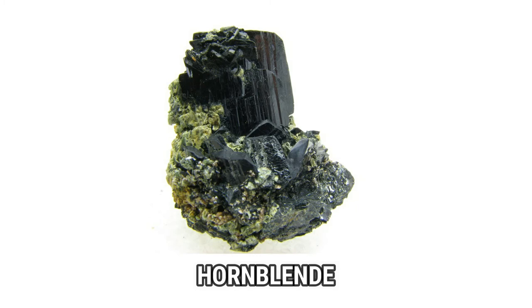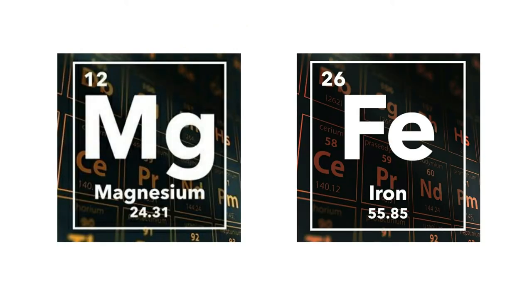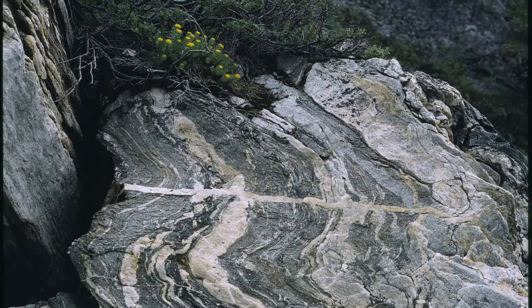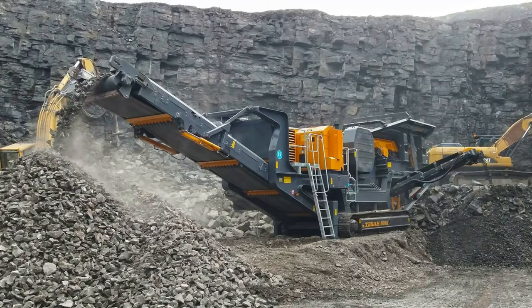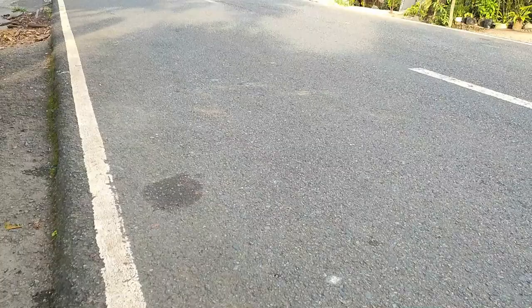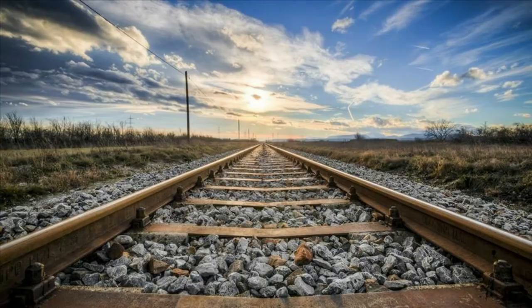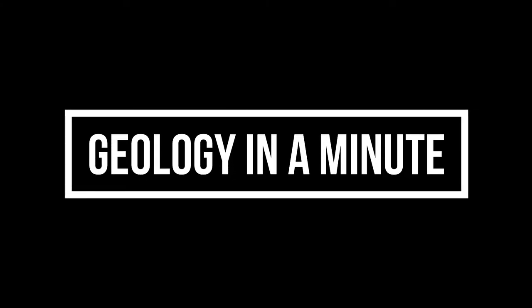The second mineral is hornblende. Hornblende is a dark brown, black, or green mineral of the amphibole group, consisting of magnesium and iron. It occurs in igneous and metamorphic rocks. Hornblende is being crushed and used in road construction and railway ballast.